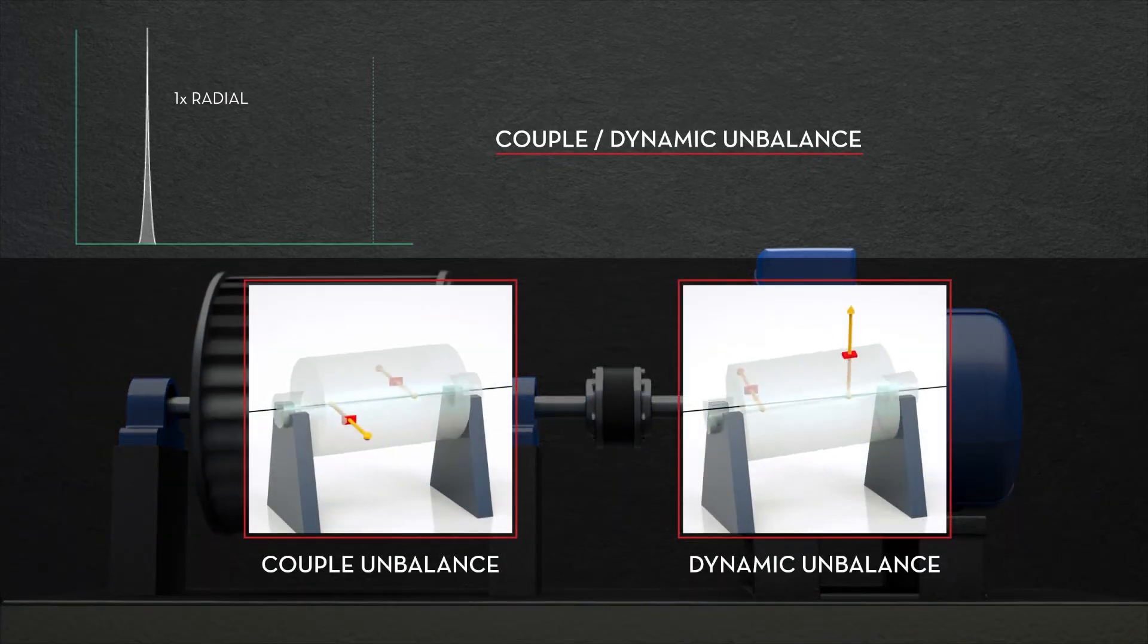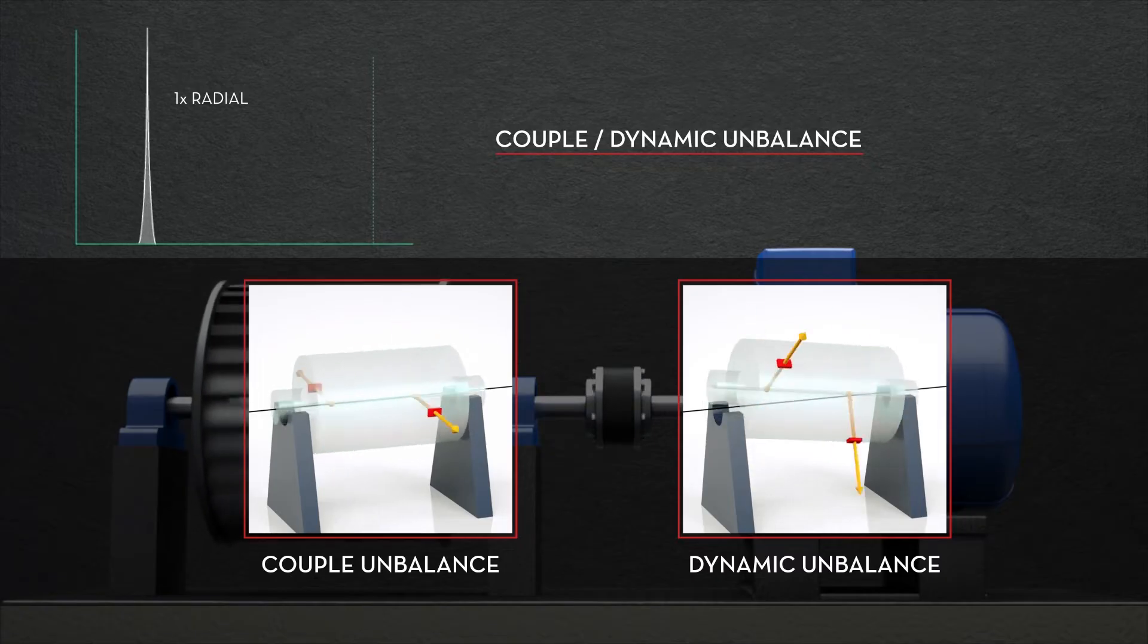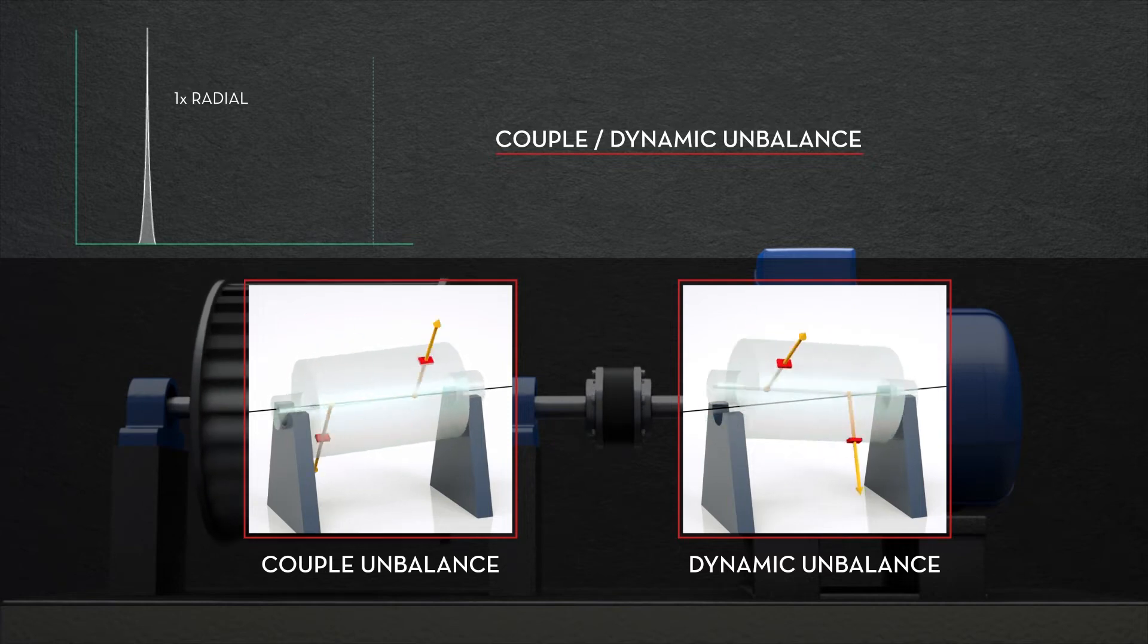With couple and dynamic unbalance, 1x will also appear larger than normal because of force applied for each rotation. Phase relationships between bearings vary based on the type of force involved.